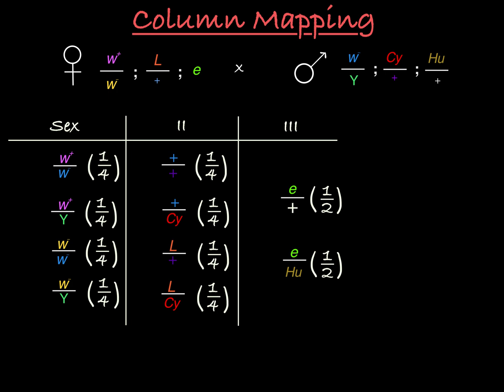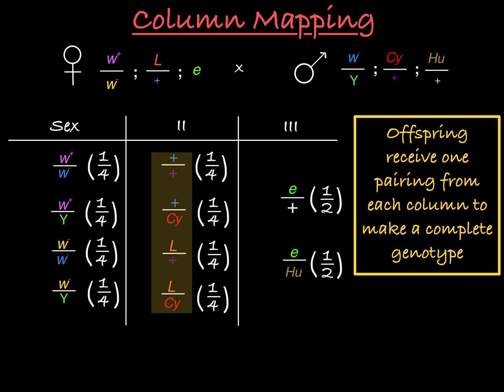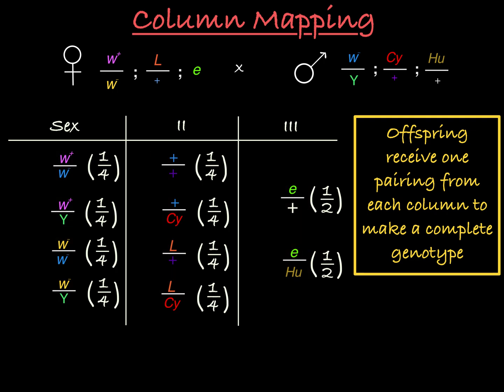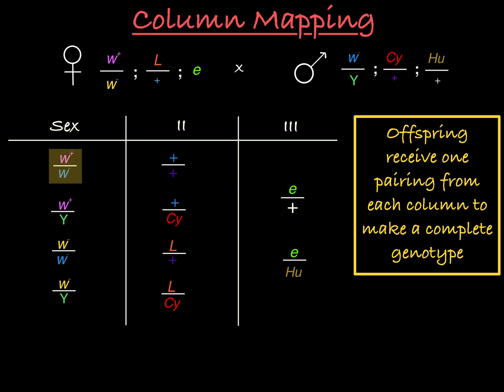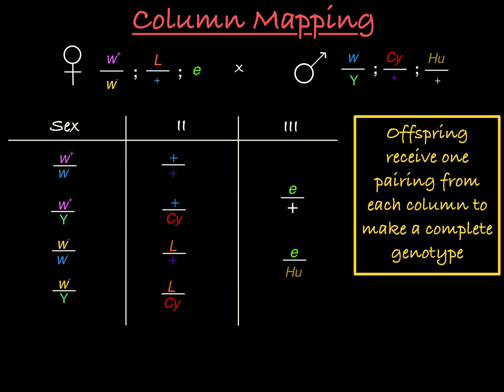Now we've mapped the cross in the columns. The offspring can have any combination of these chromosome pairings — any combination of one choice from the sex chromosome column, one choice from the second chromosome column, and one choice from the third chromosome column. A given sex chromosome combination can end up with any of the four second chromosome options and either of the two third chromosome options. Writing all of these out would be tedious, but in these columns you can see all possible combinations at once.